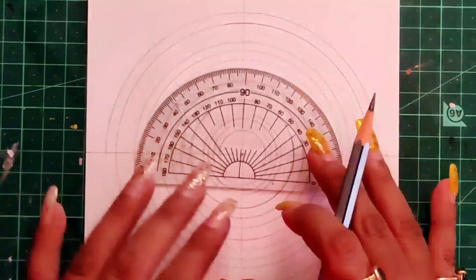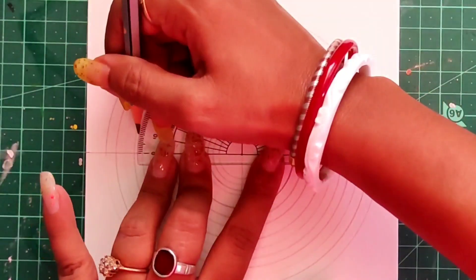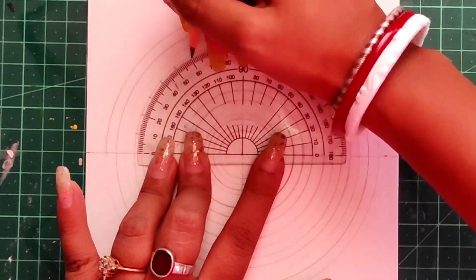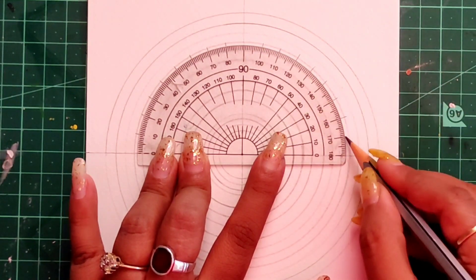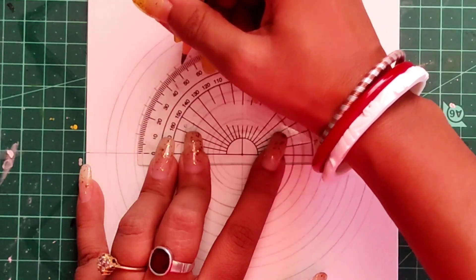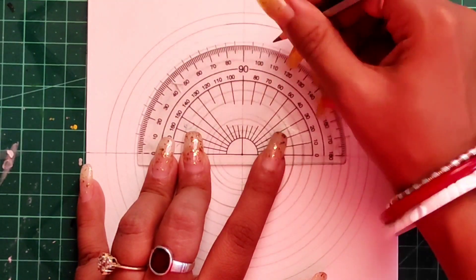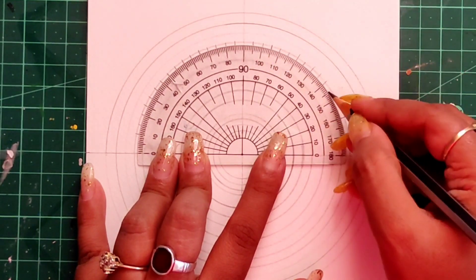After I complete this, with the help of a protractor, I will mark a point at each 10 degrees. You can also mark a point at each 5 degrees to create more intricate patterns.